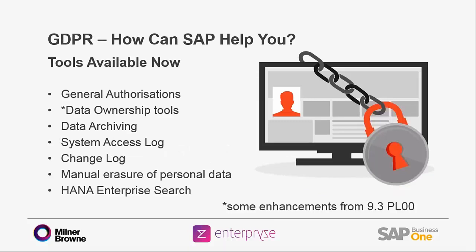To summarize, let's look at what is available in SAP Business One now that can help you find, protect, control access to and remove personal data if needed. I've listed a few of the tools here — hopefully they'll be recognizable to you, and if not then it's time to look into the system in more detail. For those of you running the HANA version of SAP Business One, you also have the added facility of being able to use the enterprise search, which gets you to all data in the system very quickly. Some of the enhancements around data ownership are only available from 9.3 patch 0.